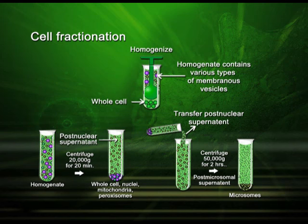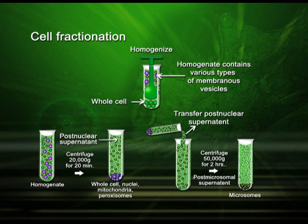Let us look into this diagram. The homogenate contains various types of membranous vesicles. This is subjected to centrifugation at 20,000 g for 20 minutes. In the pellet you can see whole cells, nuclei, mitochondria, and peroxisomes. The supernatant — the green colored portion — is again taken and centrifuged at a slightly higher RCF of around 50,000 g.